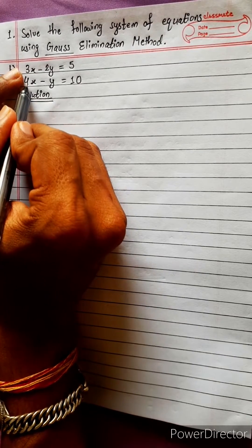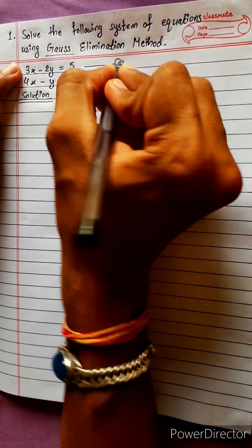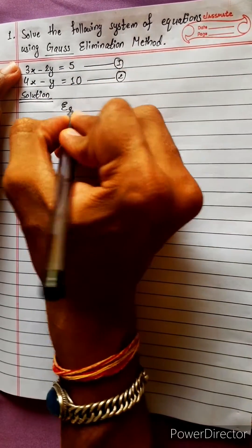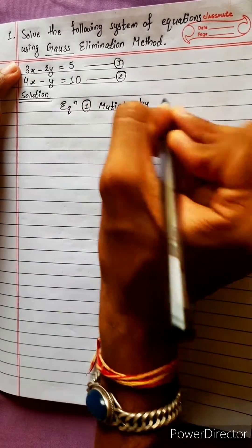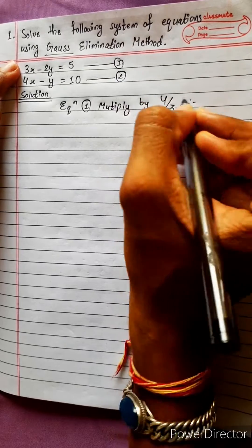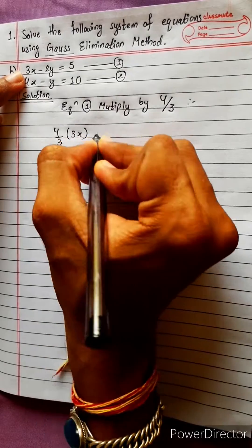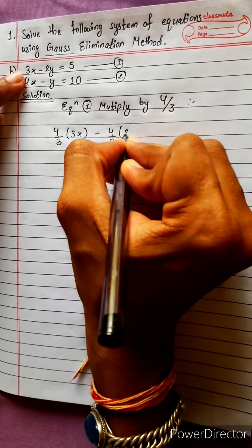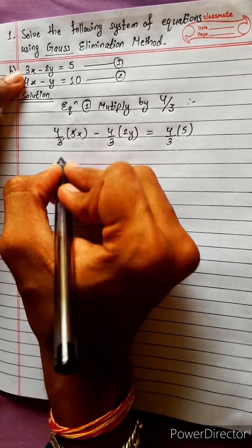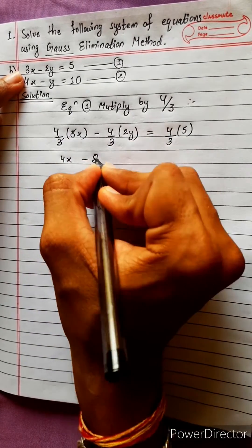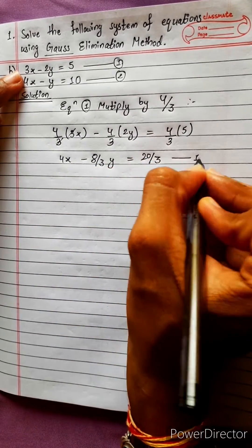We multiply the first equation by 4/3: 4/3 into 3x minus 4/3 into 2y equals 4/3 into 5, giving us 4x minus 8/3 y equals 20/3. This is equation 1.